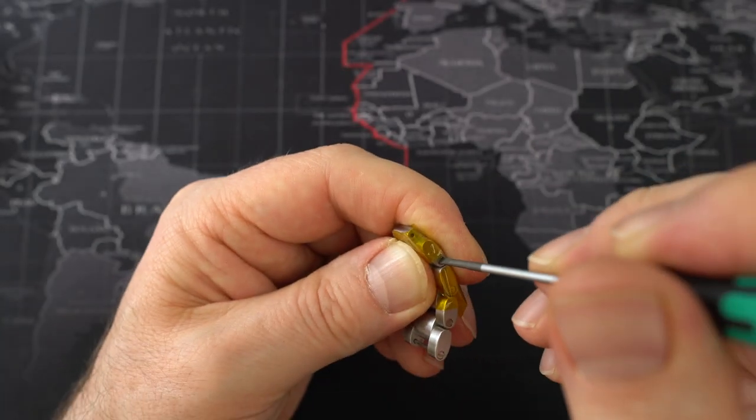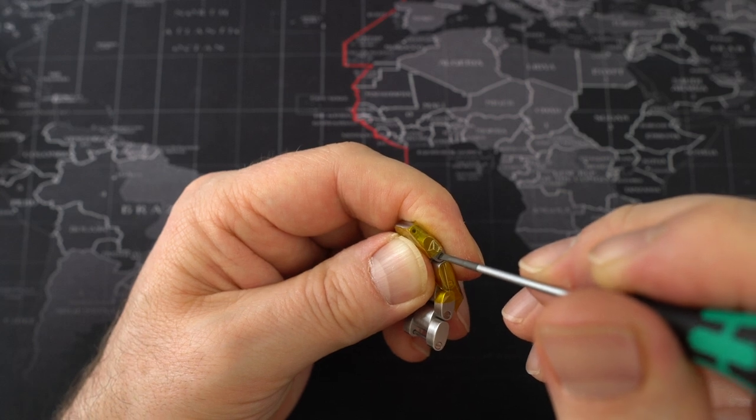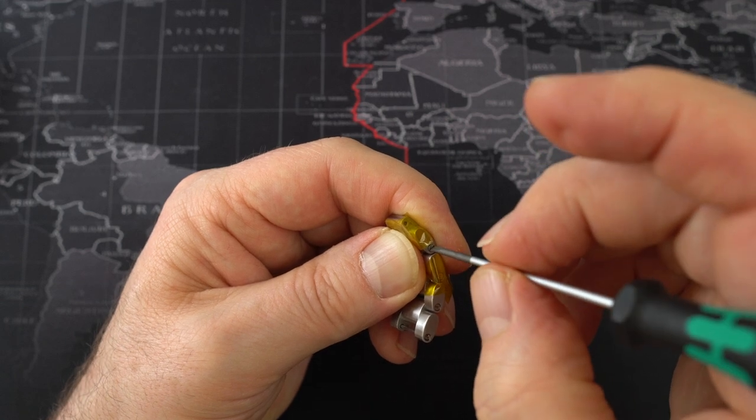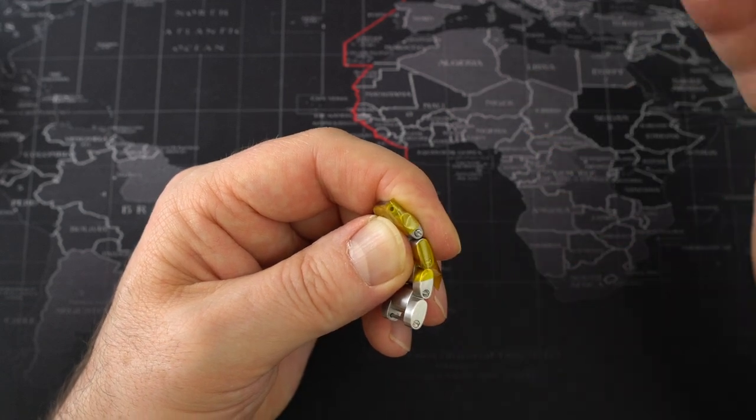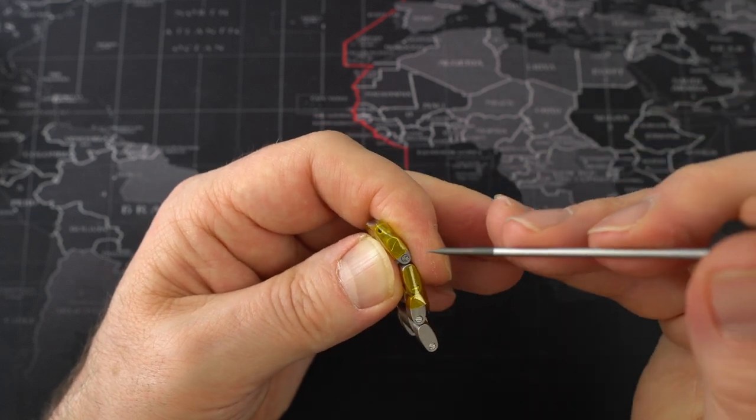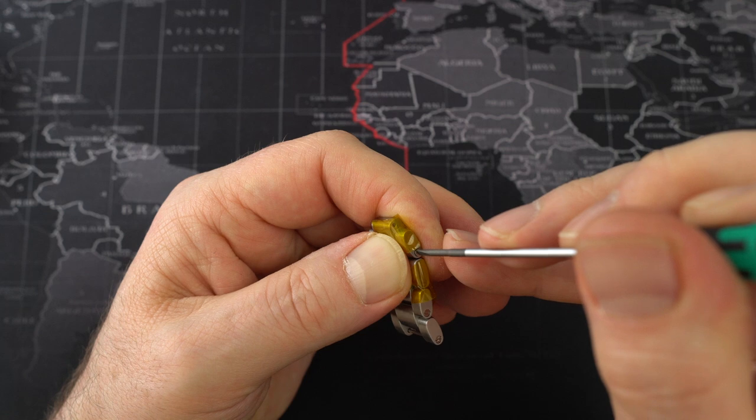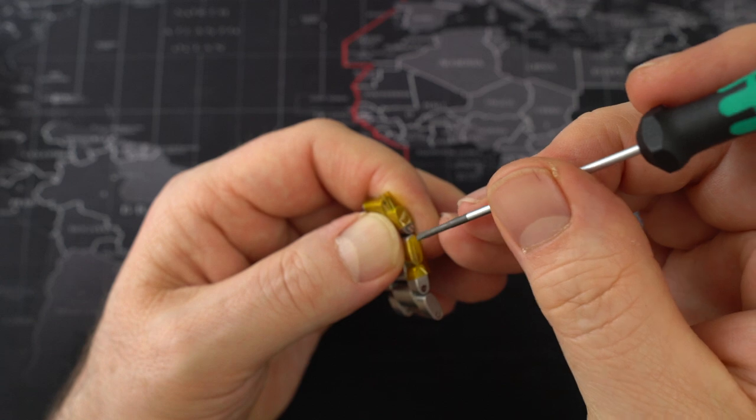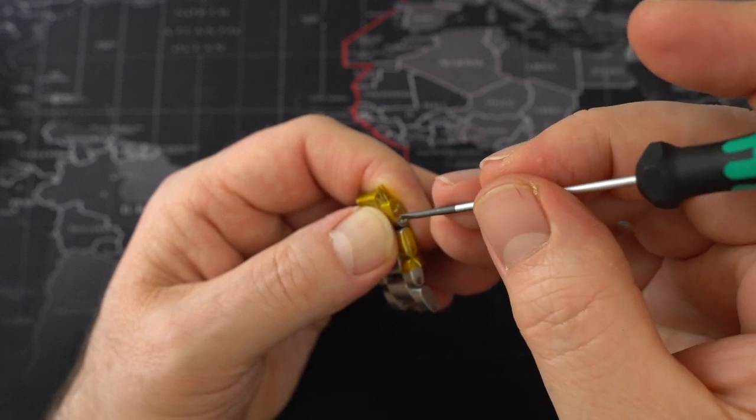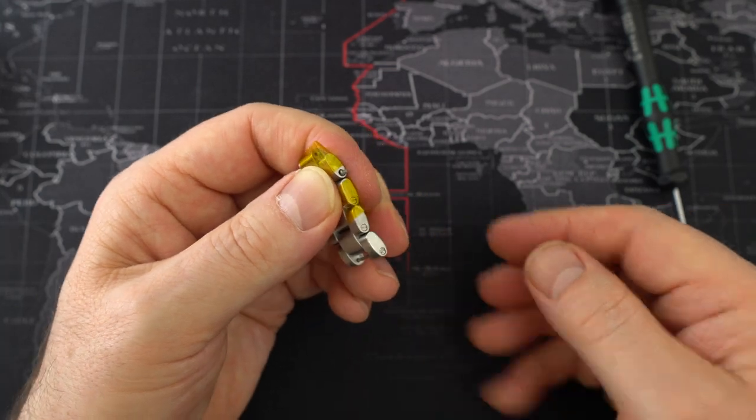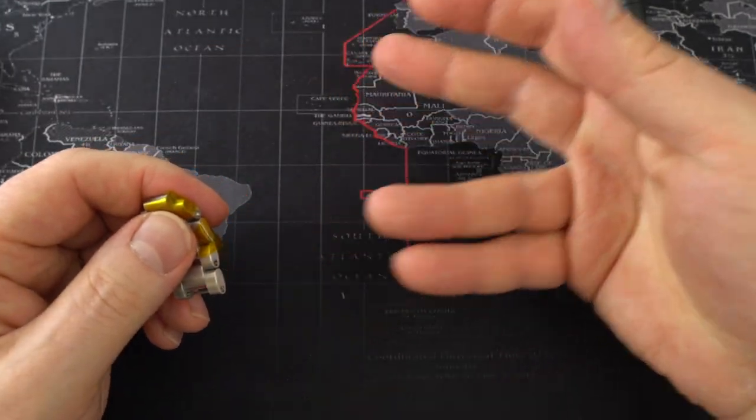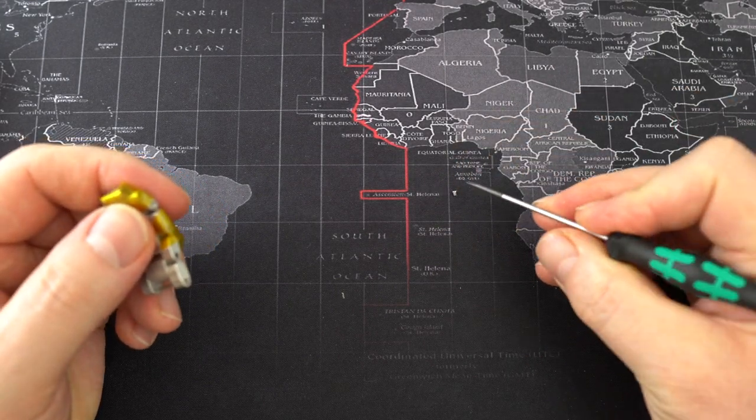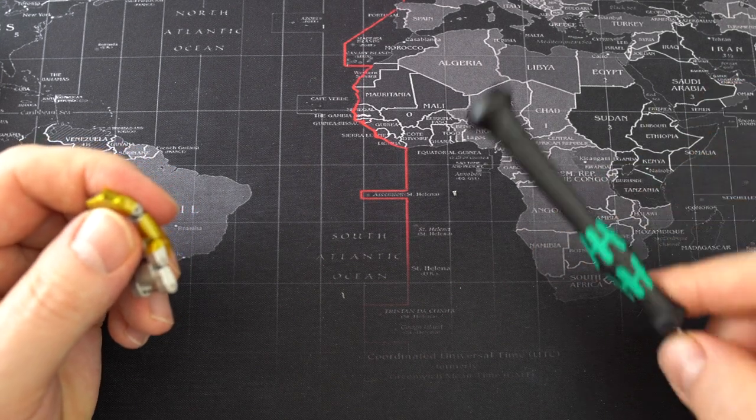Like this. And then what we're going to do is just very gently unscrew. If you think the screwdriver is about to slip just take it away immediately and then guide it back in again. Very gently. There we go. Okay so that screw has now popped out. See it's very tiny. There it is. You will lose that so be very careful.